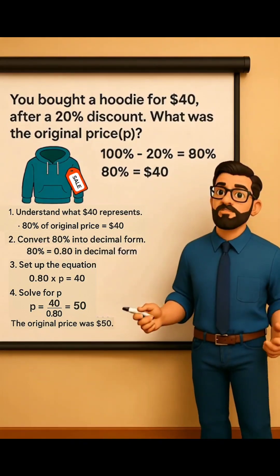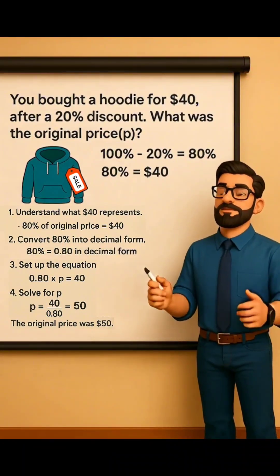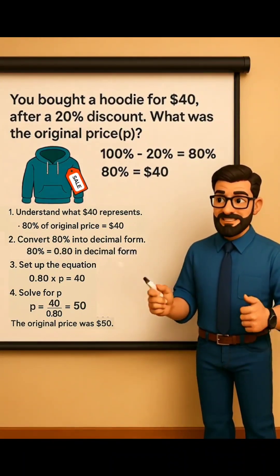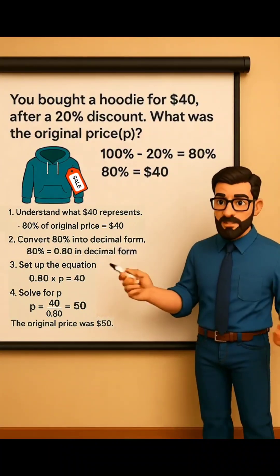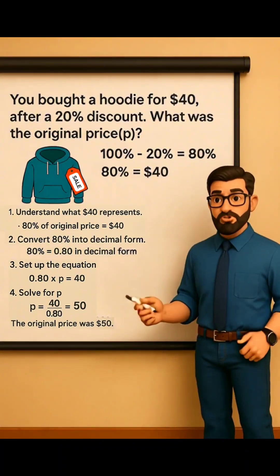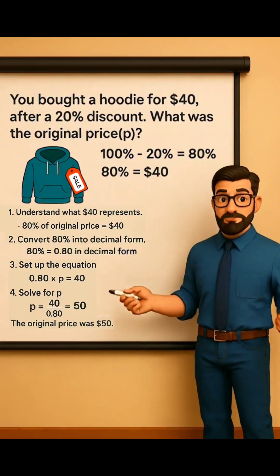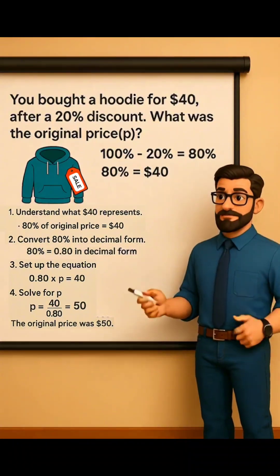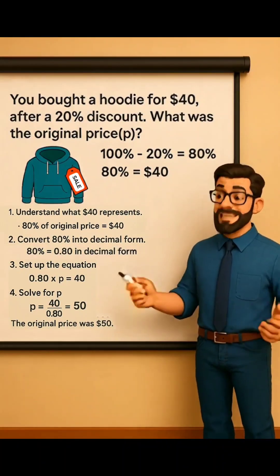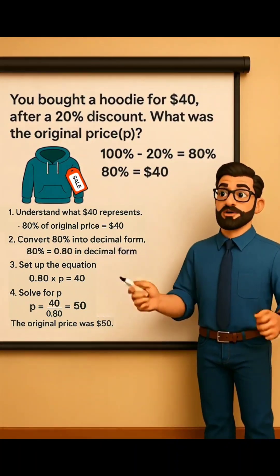Let's walk through an example to understand how this works. You bought a hoodie for $40 after a 20% discount. So what was the original price P? Here's the trick: start by figuring out how much you actually paid in percent. 100% minus 20% is 80%, so 80% equals $40.